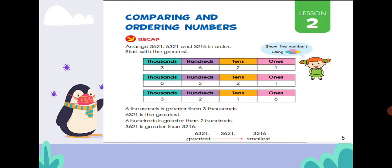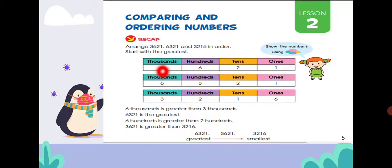You have to arrange 3621, 6321, and 3216 in order starting with the greatest. To do comparing and ordering, first you will write each digit in the place value chart.